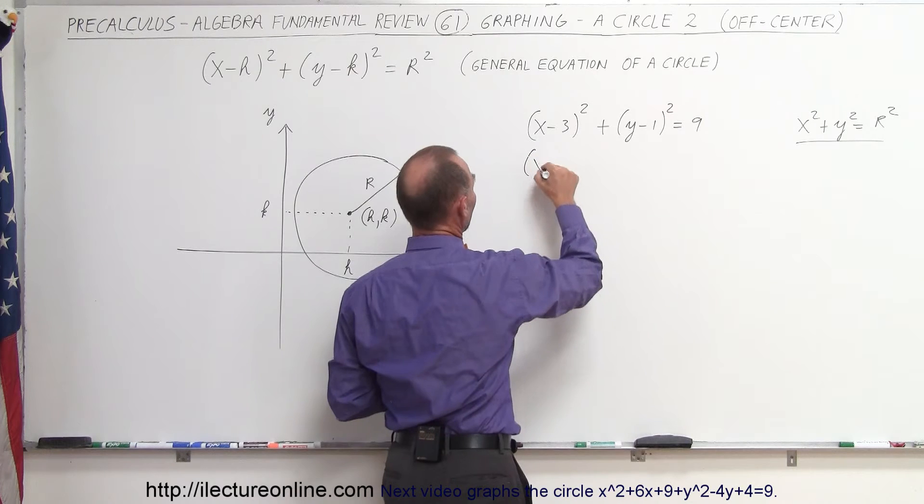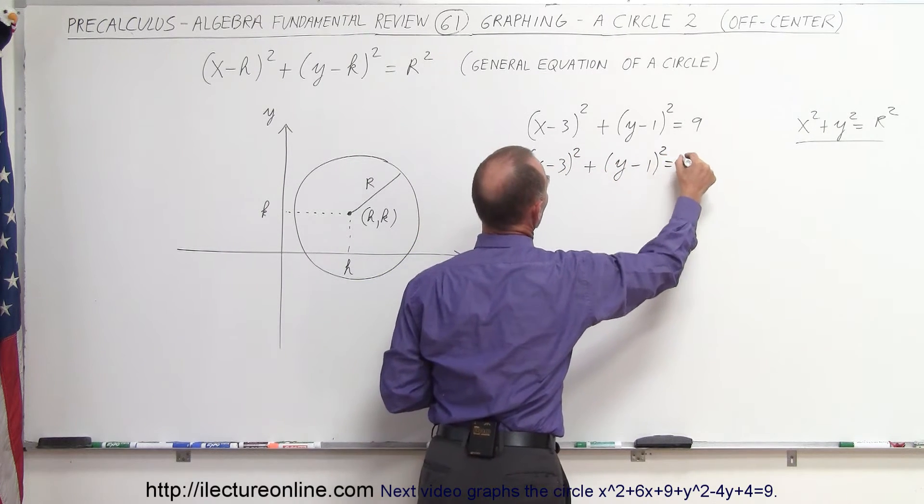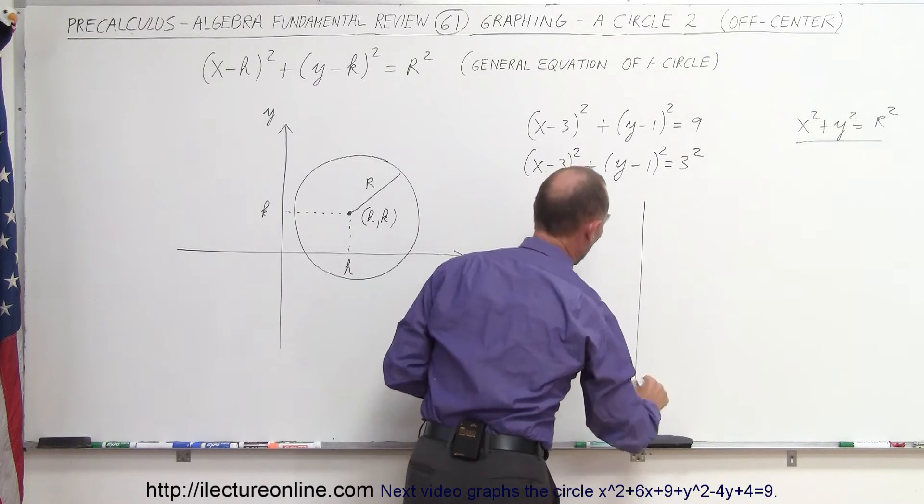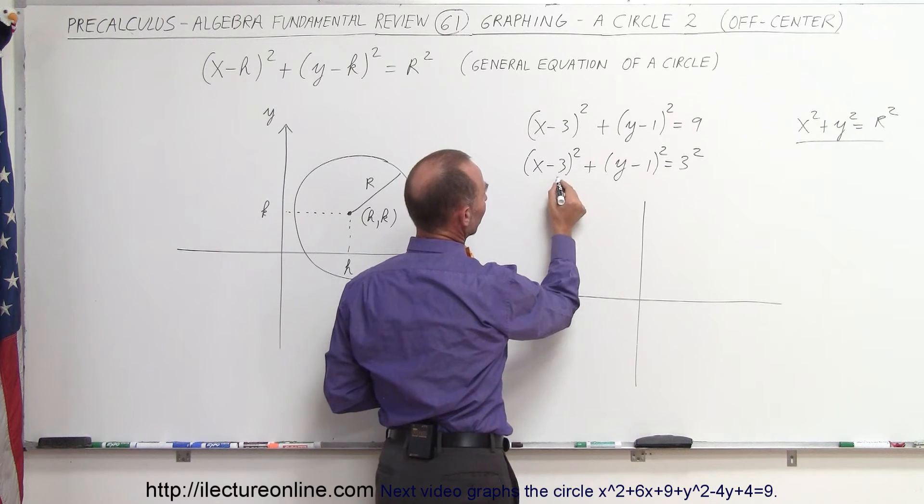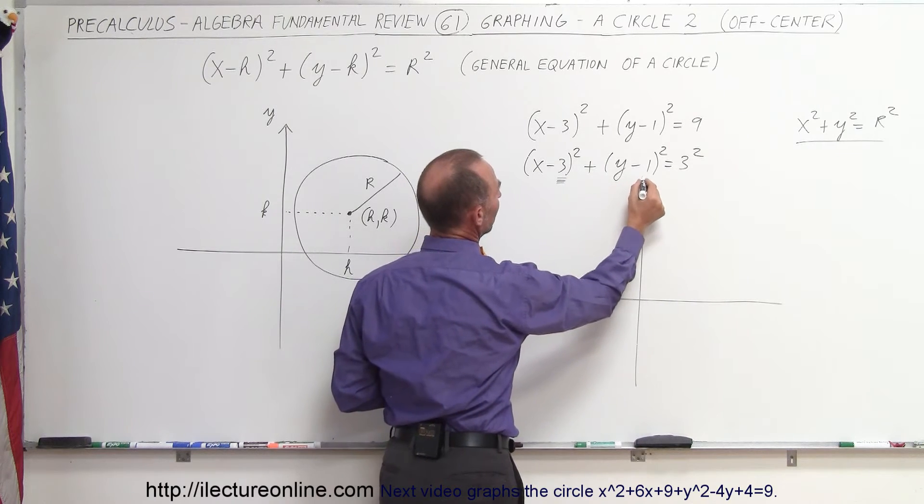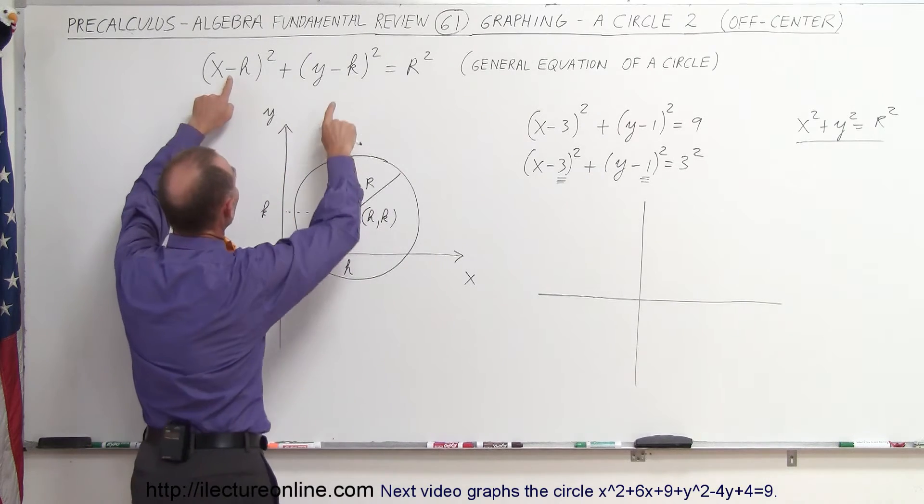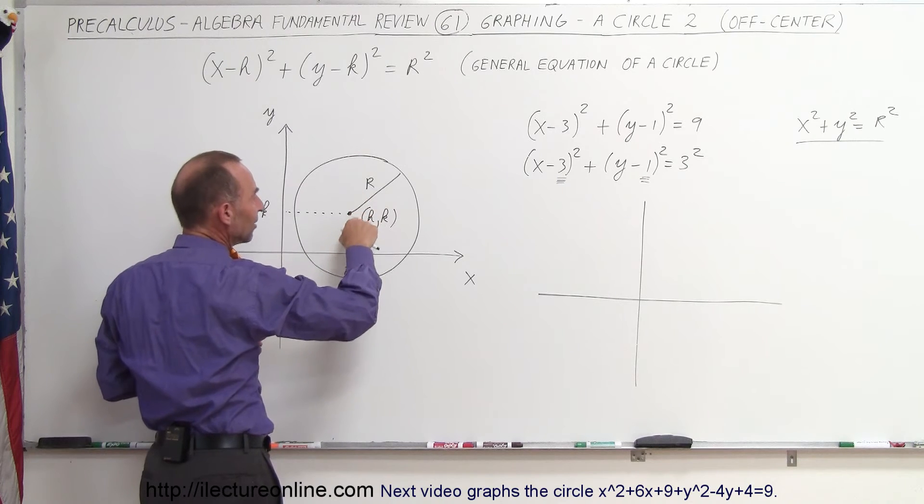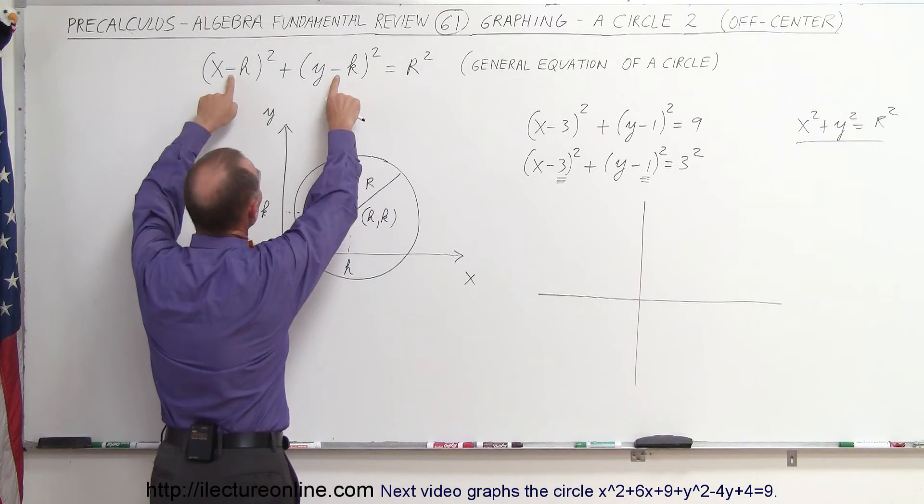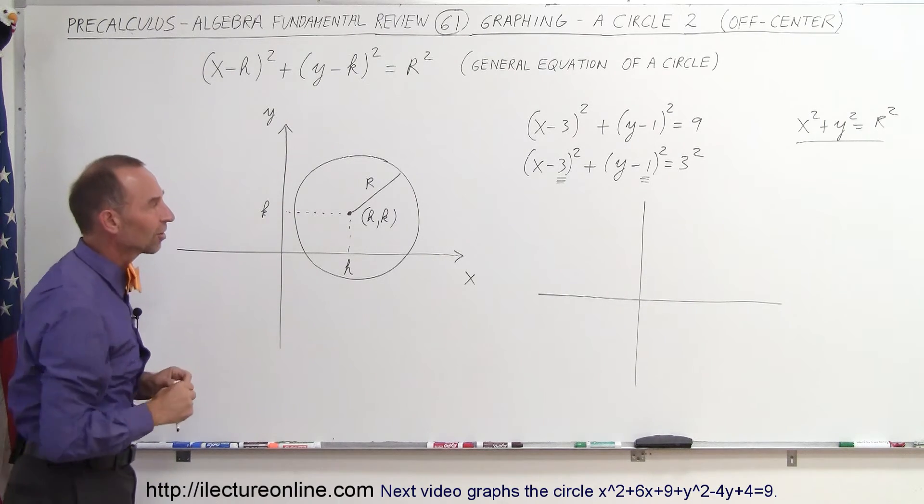We can write that as (x - 3)² + (y - 1)² = 3². And now when we want to go ahead and graph that, you realize that the center is at x = 3, y = 1. Now notice the signs. If the signs here are negative, then we put it in the first quadrant where h and k are positive. If these signs are positive, we would put it over in this quadrant and we'll see that in the next example.